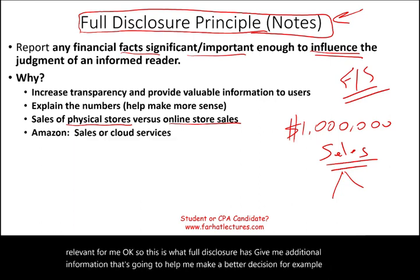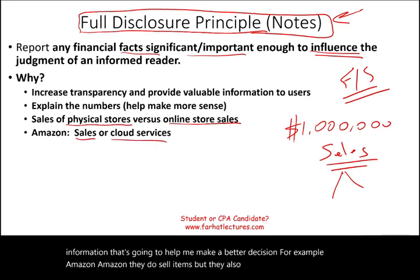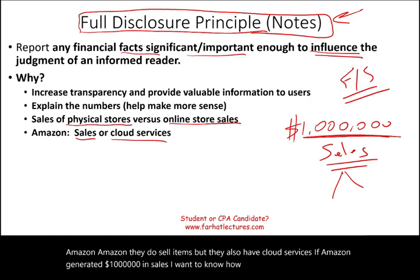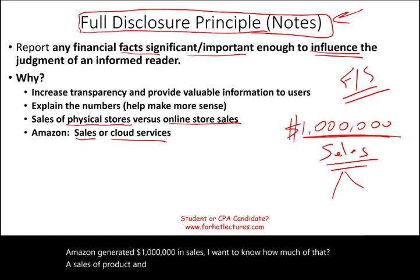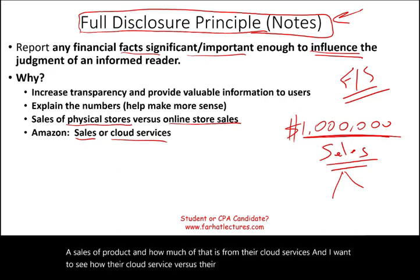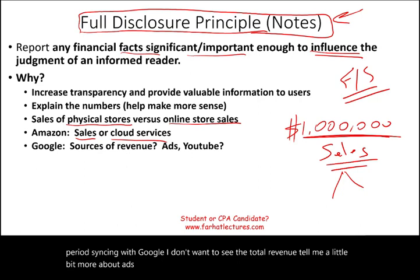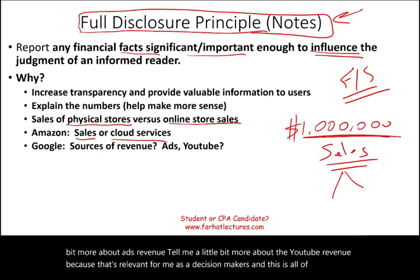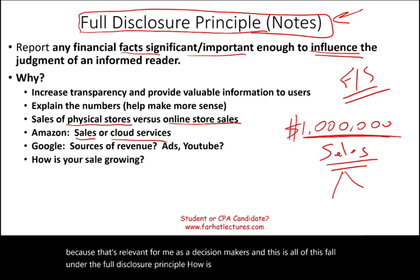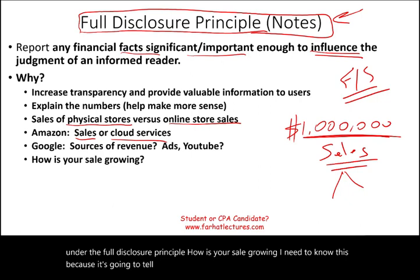For example, Amazon — they sell items but they also have cloud services. If Amazon generated a million dollars in sales, I want to know how much is from product sales and how much is from cloud services, and how each is performing period to period. Same thing with Google — I don't want just the total revenue. Tell me about ads revenue, tell me about YouTube revenue, because that's relevant for me as a decision maker. All of this falls under the full disclosure principle. How is your sale growing? Break it down a little bit more for me.